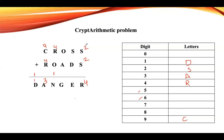Let us change the digits assigned to the letters. Instead of assigning two to S, let us take three. Three plus three gives six, so R value is six — and wherever R appears, it is six. Now nine plus six gives fifteen, which produces a carry, and five is not yet assigned, so assign five to A. Wherever A appears, assign five.